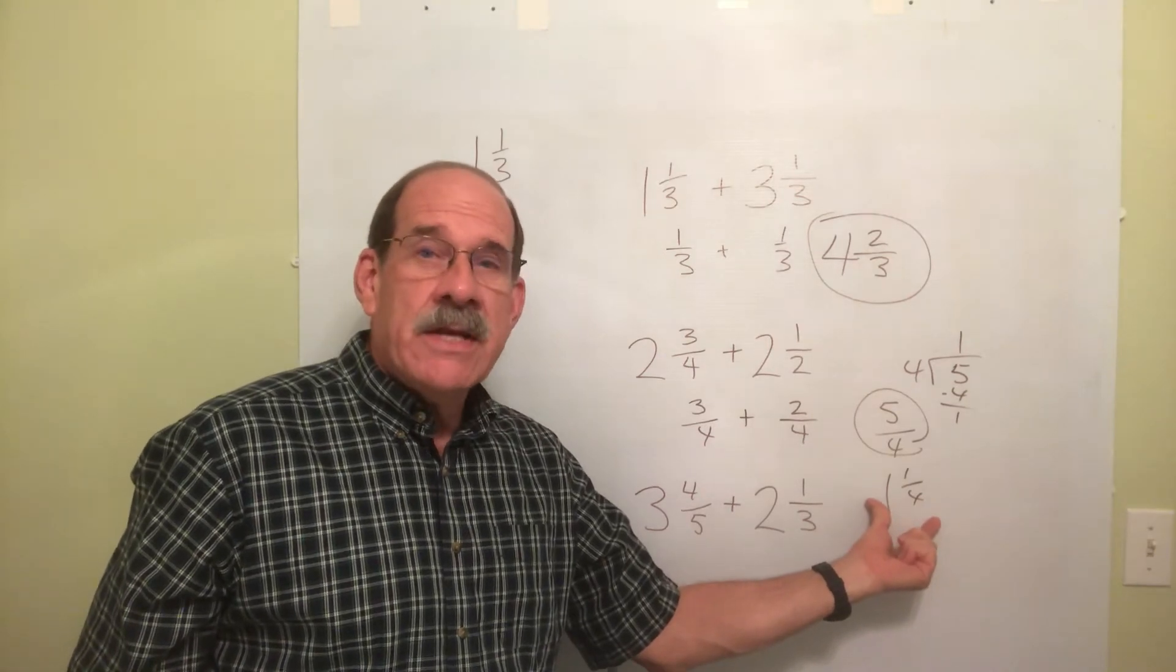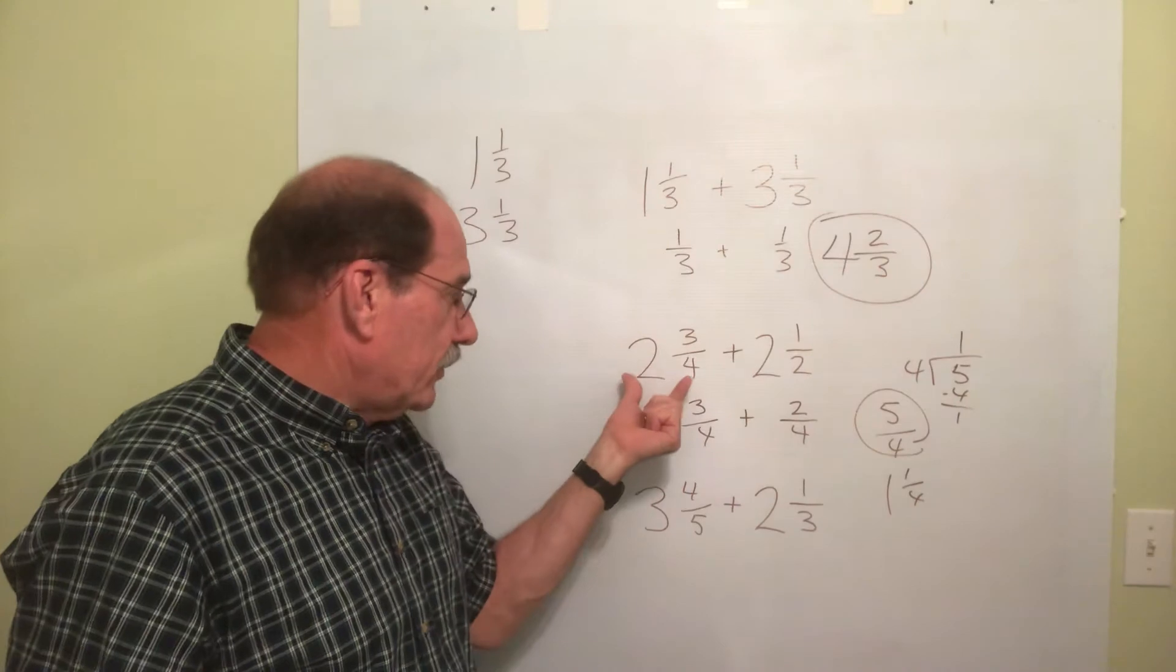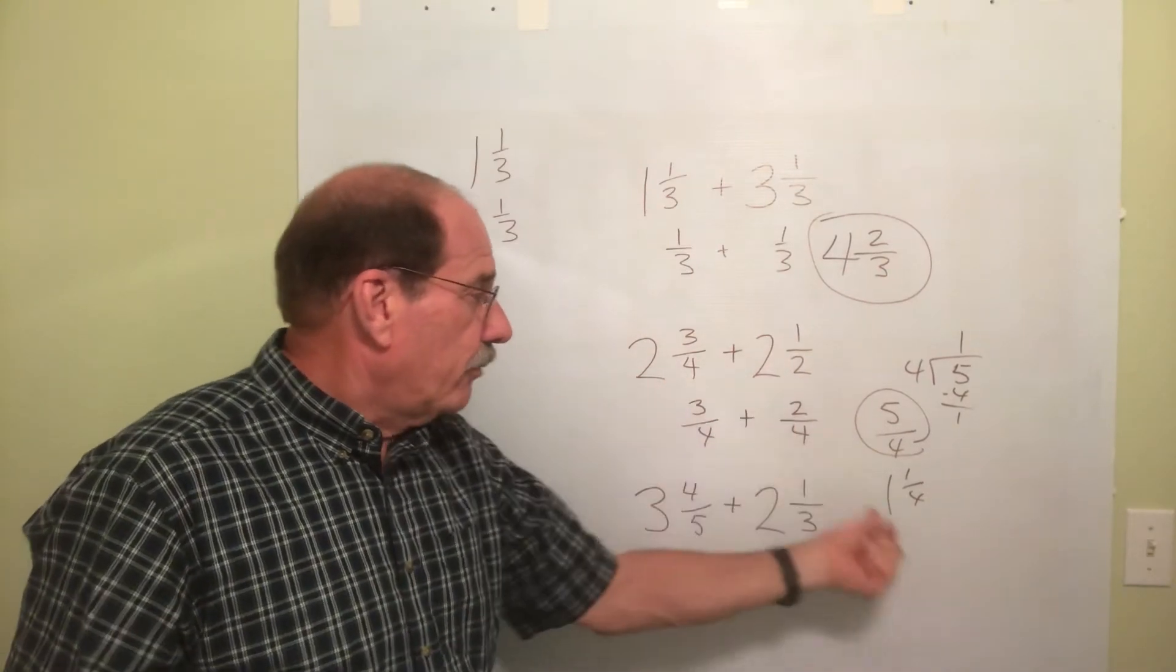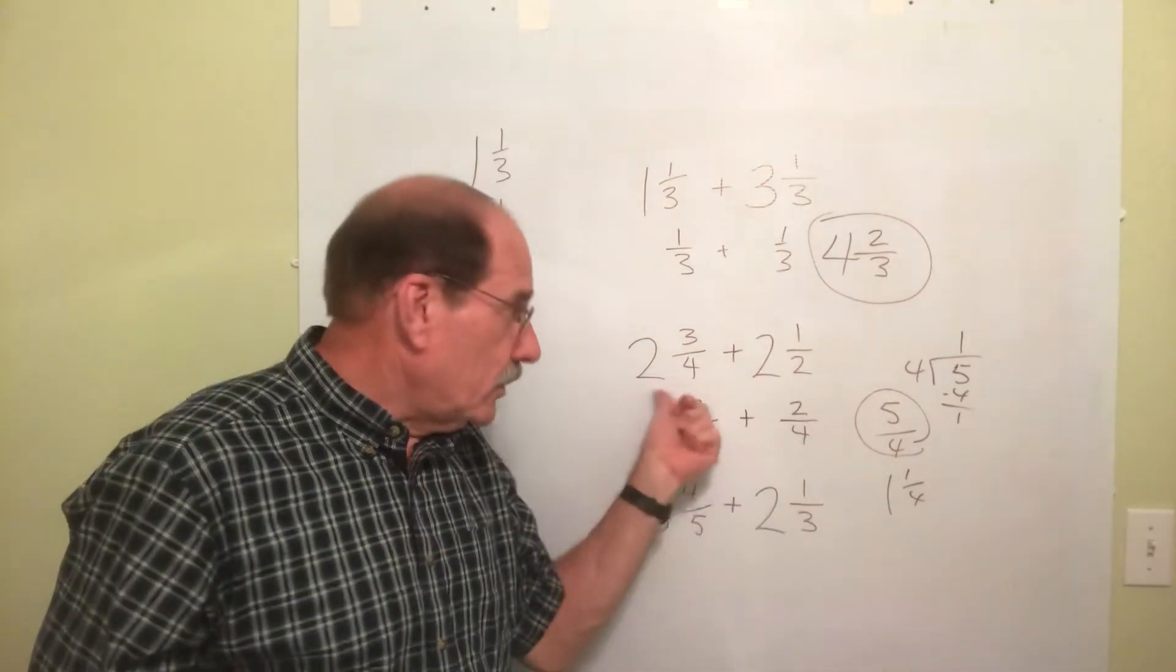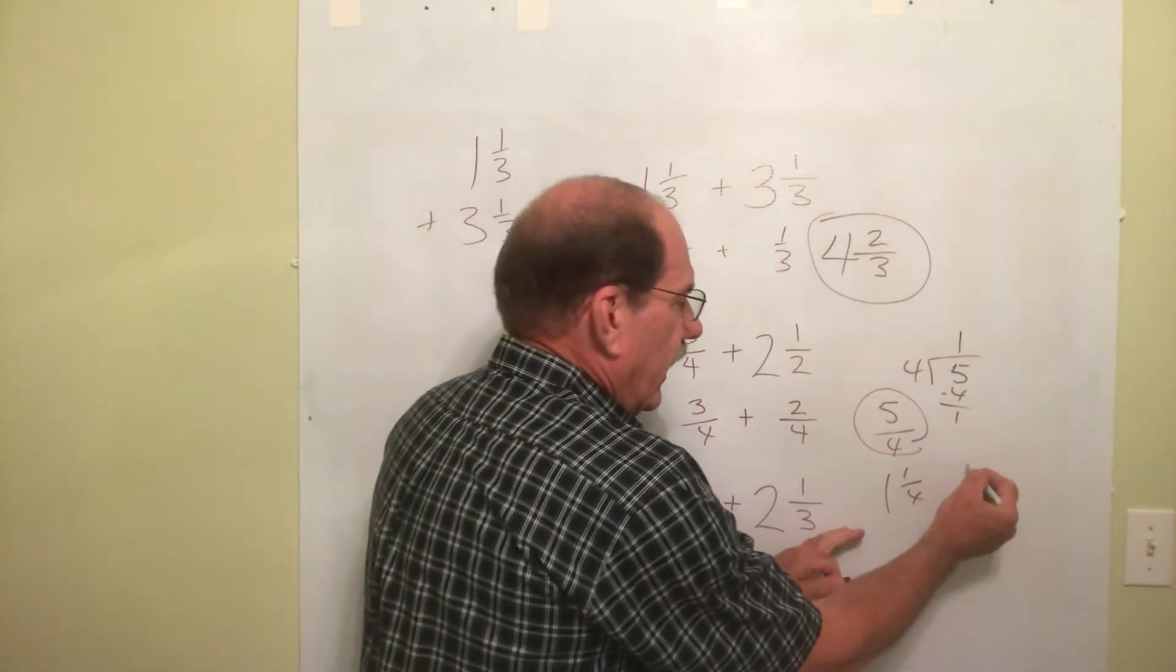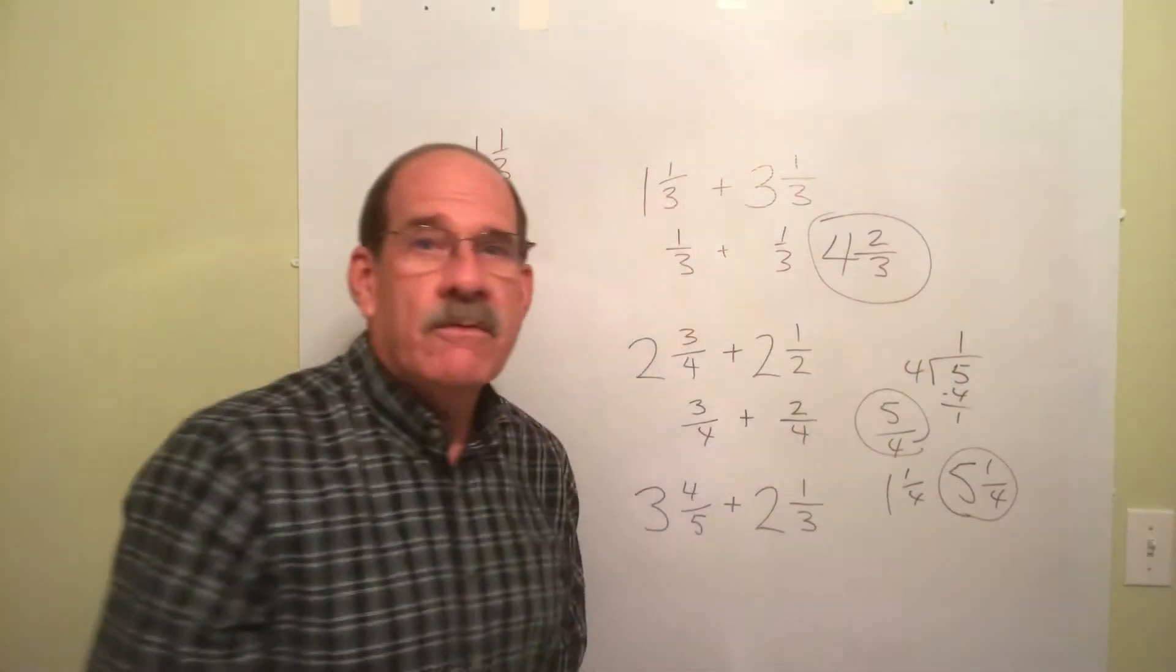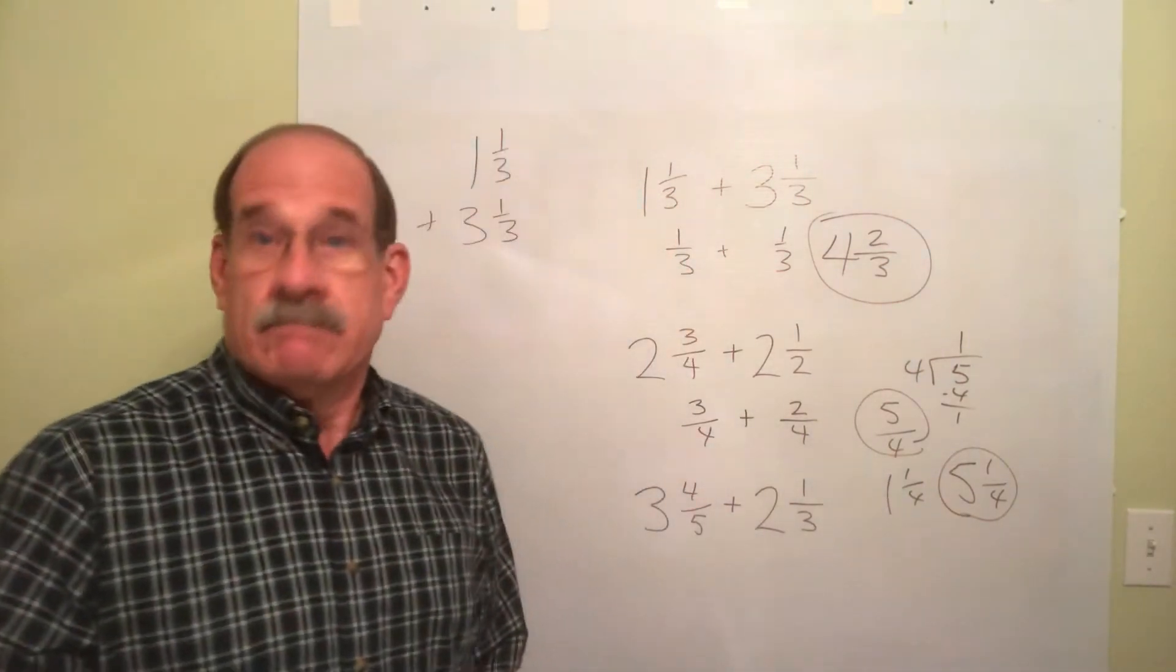Once I've got it to this stage, now I'm going to go back and pick up my whole numbers. So now it's 2 plus 2 plus this 1. So 2 plus 2 plus 1 is 5. So the final answer is 5 and 1 fourth. See how that worked.